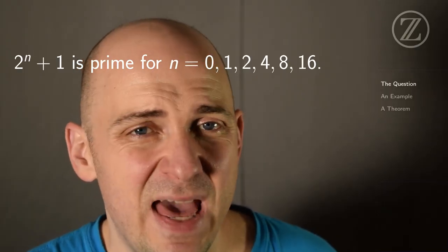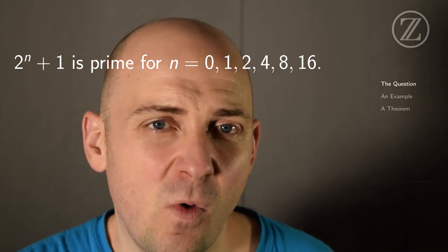2 to the n plus 1 is prime when n is 0, 1, 2, 4, 8, 16.